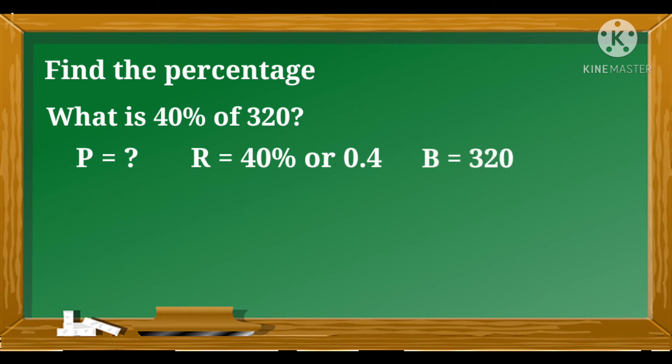We will use the formula, which is percentage equals rate times B. Then, we will substitute again the value of R and B to our formula. So, 0.4 times 320.